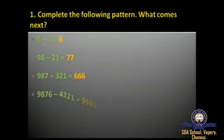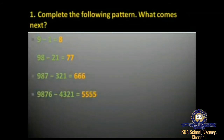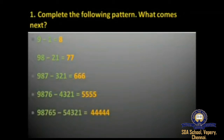The fourth pattern is 9876 minus 4321. When you subtract 4321 from 9876 the answer you get is 5555. In this pattern, 9876 is formed by extending the previous step, and the number before 7 is 6, so 9876; the subtracted number 4321 is formed by the number after 3 being 4.